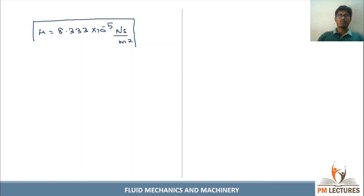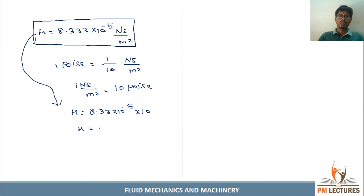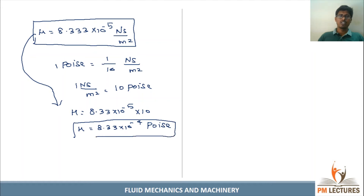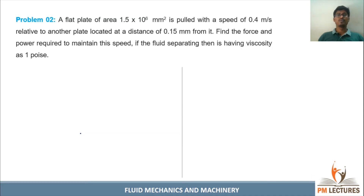Converting units: 1 N·s/m² equals 10 poise. So μ = 8.33 × 10⁻⁵ × 10 = 8.33 × 10⁻⁴ poise. That is the final answer for Problem 1, with the result expressed in both N·s/m² and poise units.